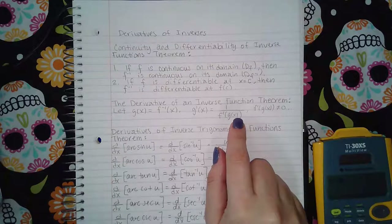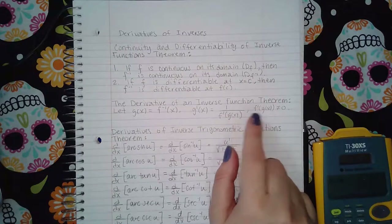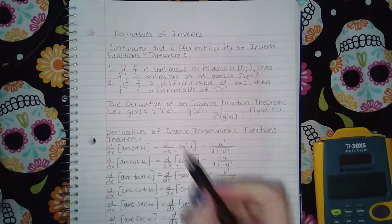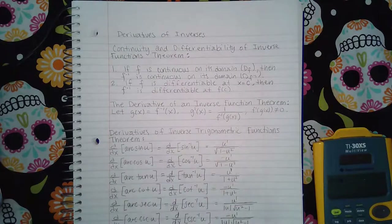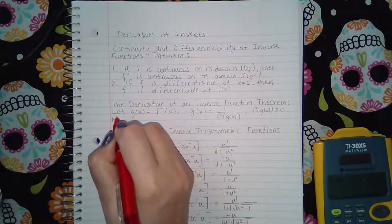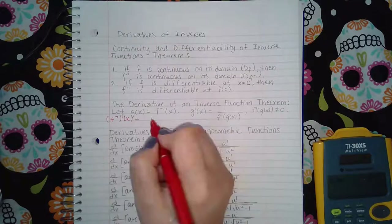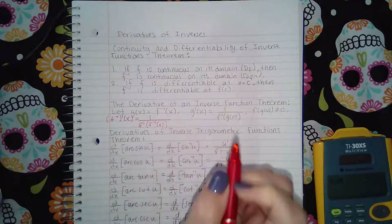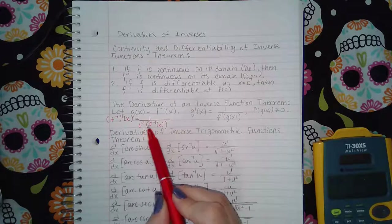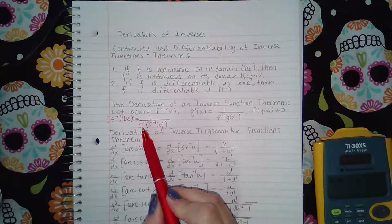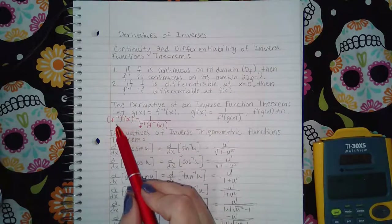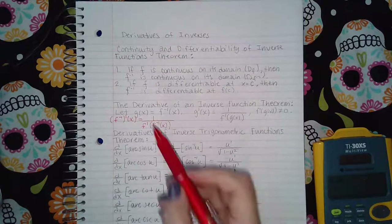I prefer to write the more complicated version because I find it more useful. I'll write it in red so it stands out: (f⁻¹)'(x) = 1 / f'(f⁻¹(x)). The reason the textbook simplifies it is that this version can look confusing — you have the inverse notation superscript -1, the prime notation ', and f inverse all together — but this fuller form makes the structure clearer.